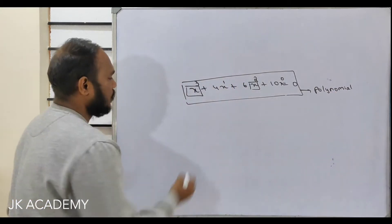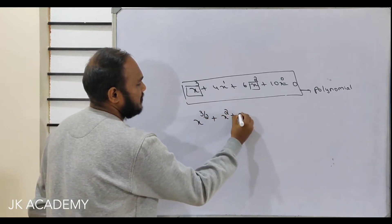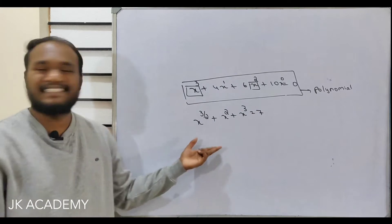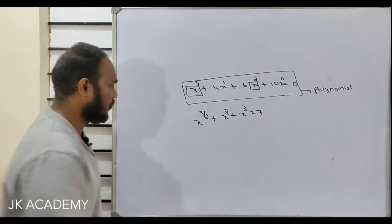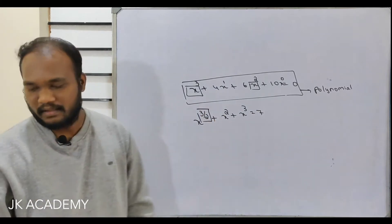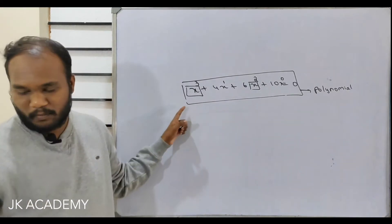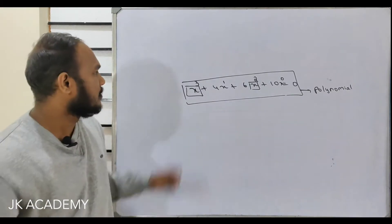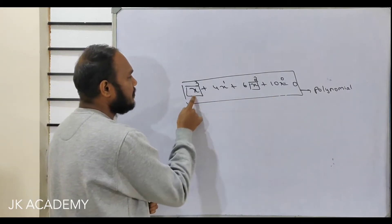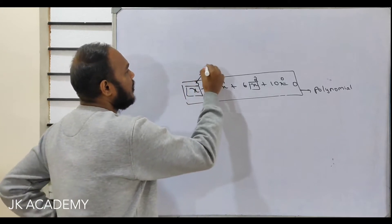If I write x to the power 3/2 plus x squared plus x cubed equals 7 — is this a polynomial? No, because there is a fraction in the power. Another thing we can get from a polynomial is the highest power among all the terms. The highest power here is 3, and this is called the degree of a polynomial.